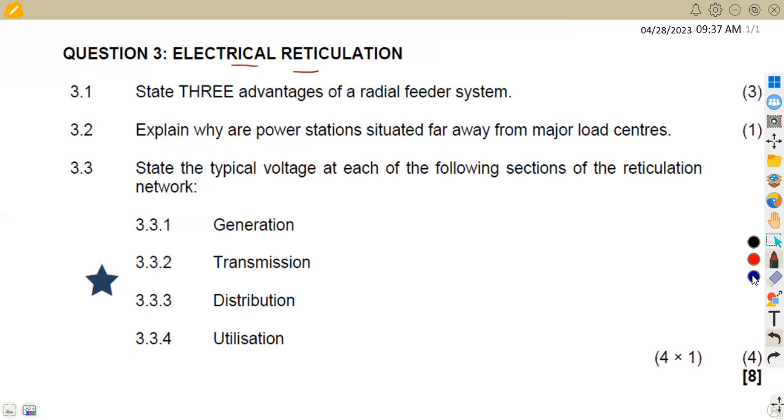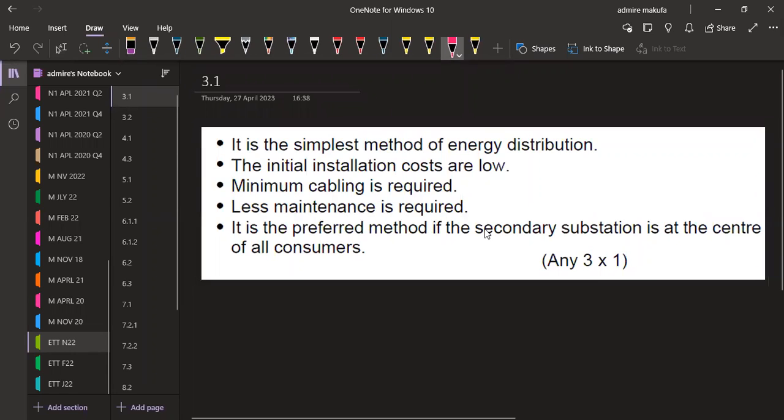These are three advantages of a radial feeder system. You just pick any three from these ones. The first part: it is the simplest method of energy distribution. The other part: the initial installation costs are low, the minimum cabling is required, less maintenance is required. It is the preferred method if the secondary substation is at the center of all customers. You're just going to have any three from these points that we have.